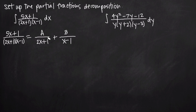If we have quadratic factors then we need to have Ax plus B or Cx plus D, and if we have repeated linear factors then our decomposition looks different. But the point of this video is just to show you how to solve for the constants A and B — I want to talk about two different methods for finding these constants.